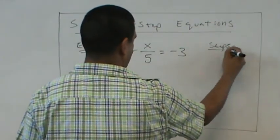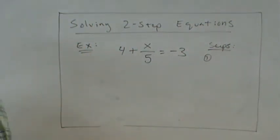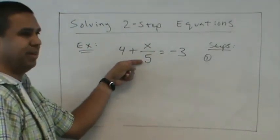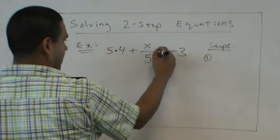Steps. What would be the first step? Multiply. We want to get rid of the fraction. Remember fraction meant division. So if we're dividing by 5, we should multiply by 5.